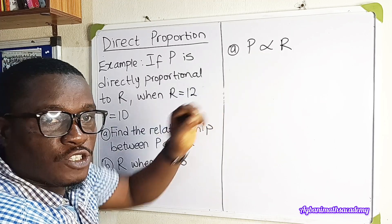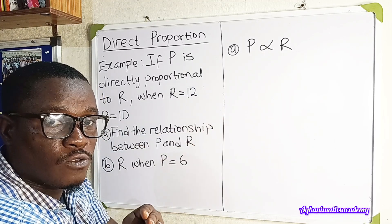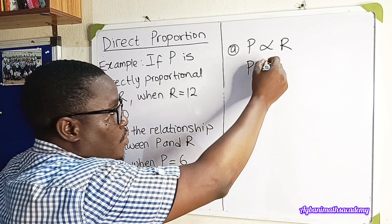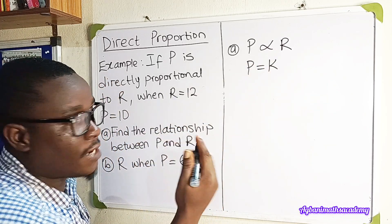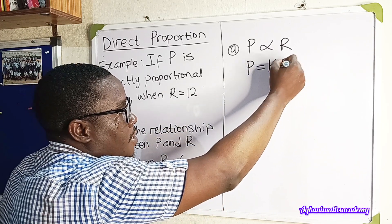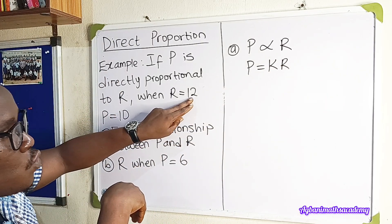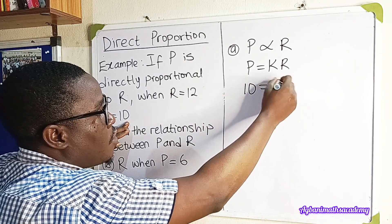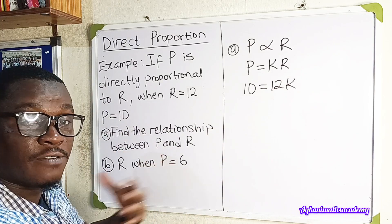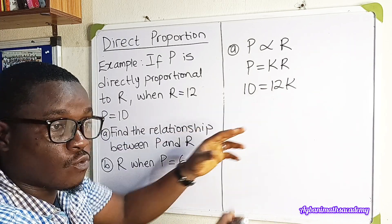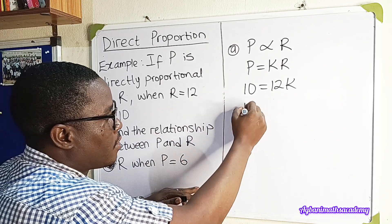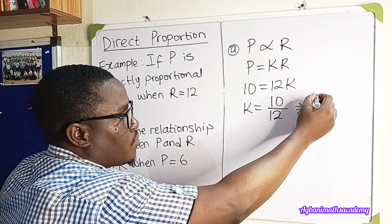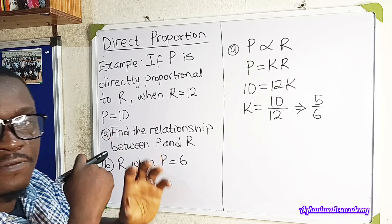We are told P is directly proportional to R, but we cannot solve with the proportionality sign — we have to change it to an equal-to sign and introduce K. So P equals KR. We are told when R is equal to 12, P is equal to 10, so: 10 = 12K. Therefore K = 10/12, which simplifies to K = 5/6.